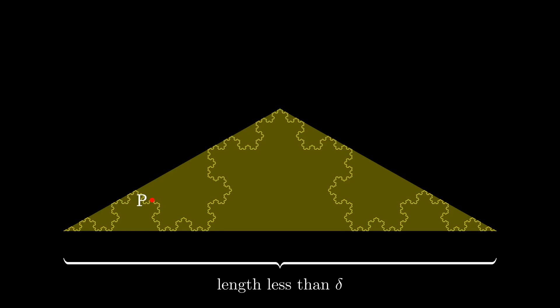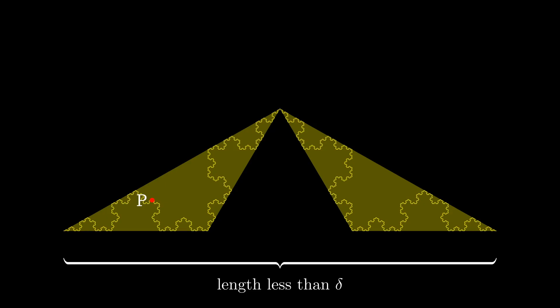At the next iteration, the middle equilateral triangle would be removed, leaving two isosceles triangles. In the first case shown here, P is in the left triangle. The vertices of these two isosceles triangles are all points on the Koch curve since the vertices belong to every set TN in the construction of the Koch curve.